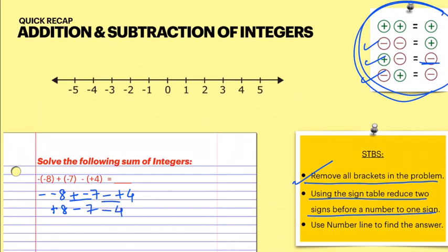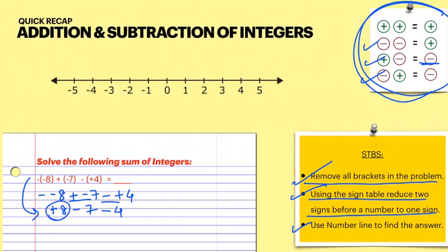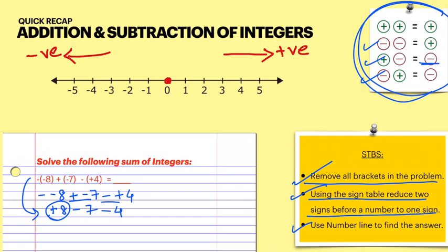Step two is now complete. The last step is to use the number line to find the answer. We have simplified the question to: plus eight, minus seven, and minus four. On the number line, zero is in the middle, positive numbers are on the right, and negative numbers are on the left. Let's extend the number line up to minus eight and plus eight.